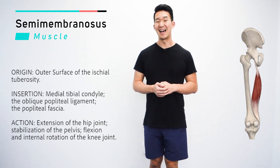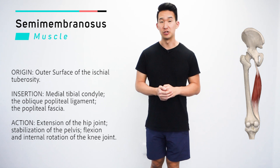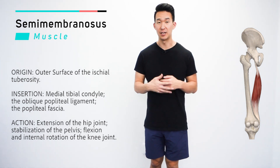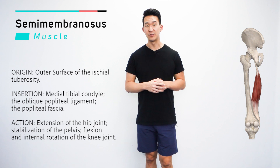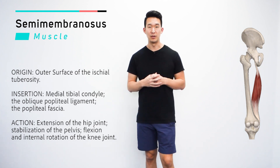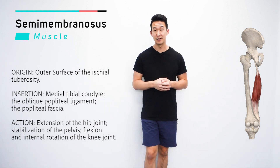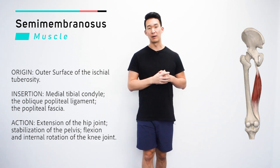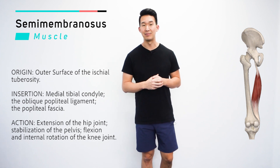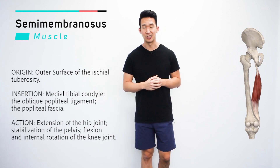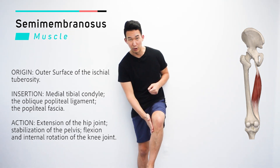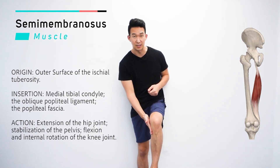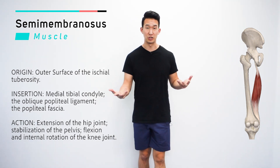The origin for the semimembranosis is the outer surface of the ischial tuberosity — the butt bone. The insertion point is going to be the medial tibial condyle, and also the oblique popliteal ligament and popliteal fascia. So we're looking at the inner portion of the upper lower leg — right around this area is where the insertion point is.